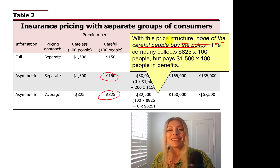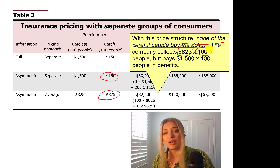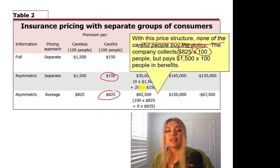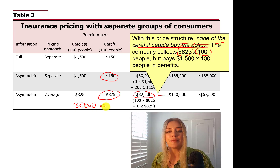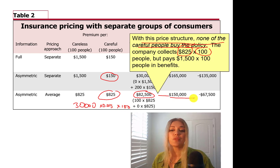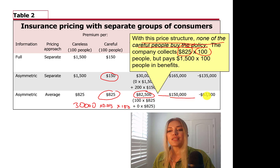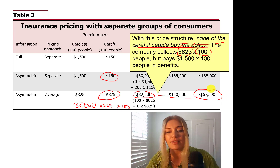Only careless people will buy the policy. $825 paid by each careless person times 100 people gives $82,500 collected. But since only careless people bought insurance, the payout is $30,000 times 5% times 100 people, equaling $150,000. So $82,500 minus $150,000 equals negative $67,500. The market has failed again.